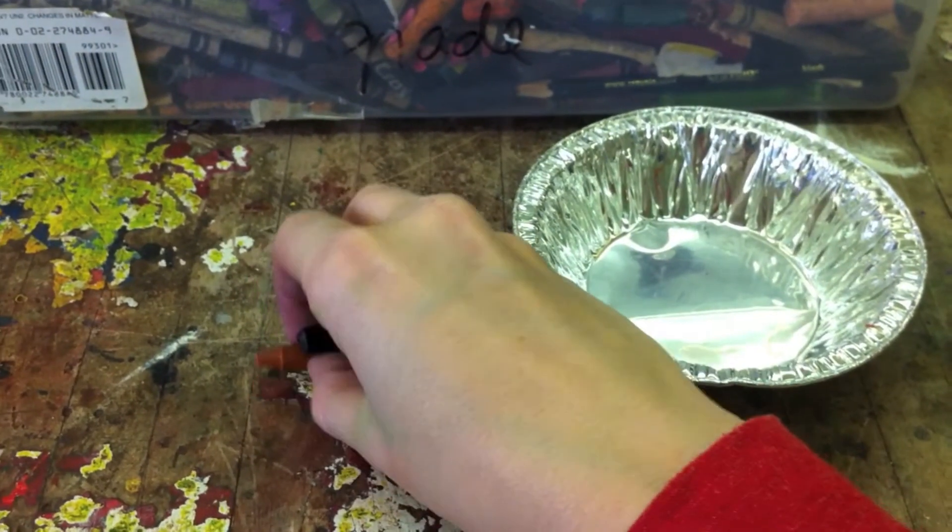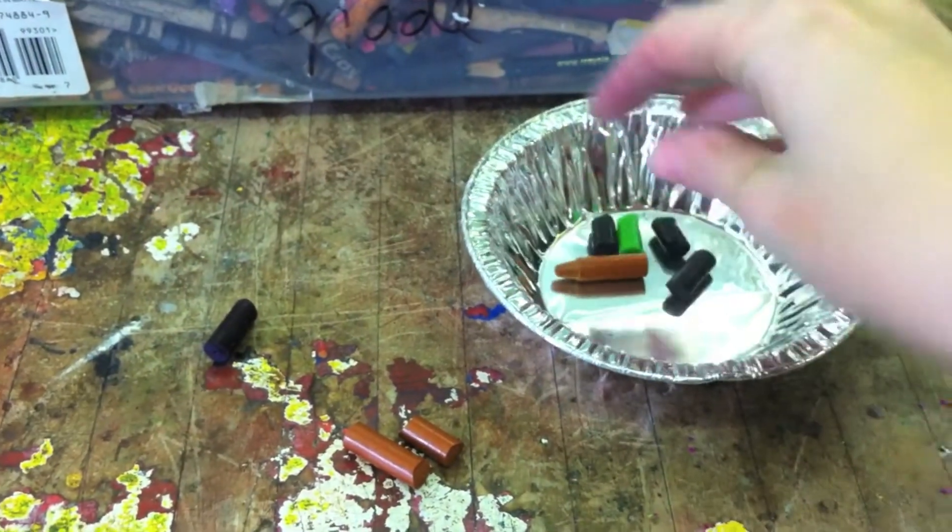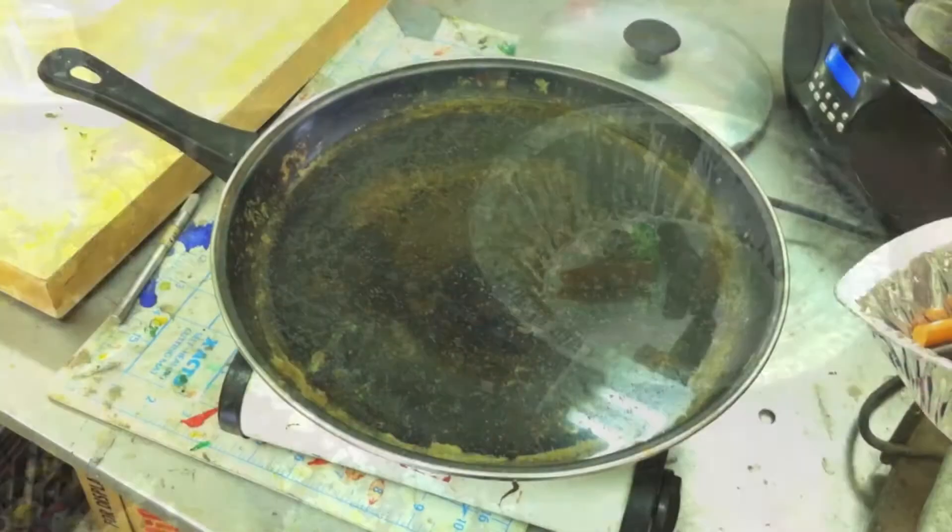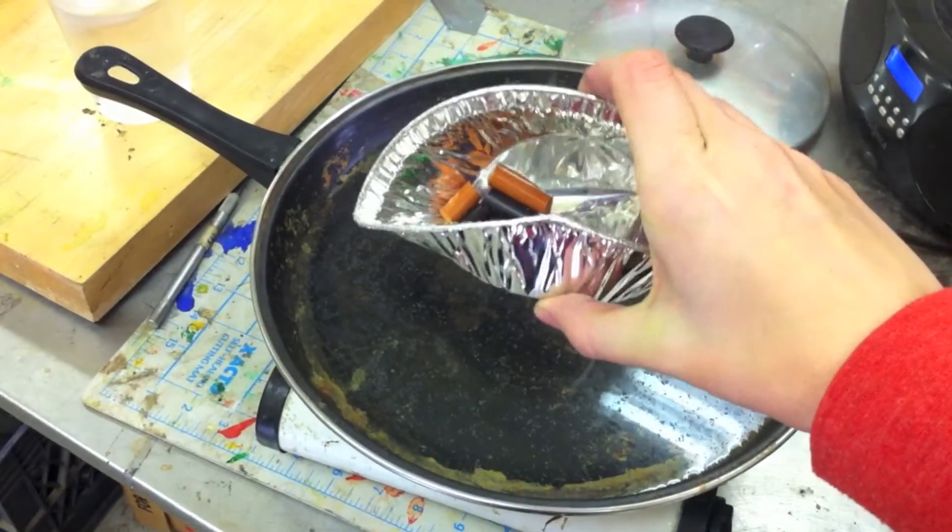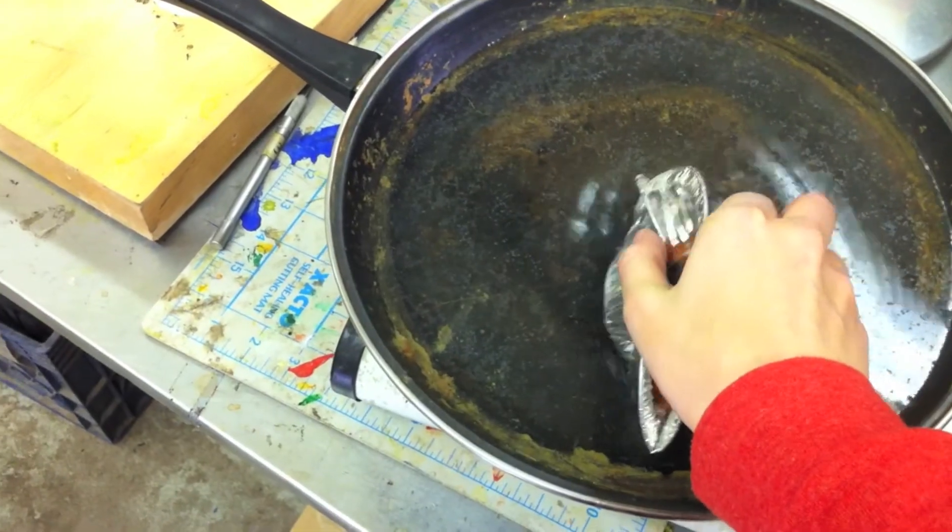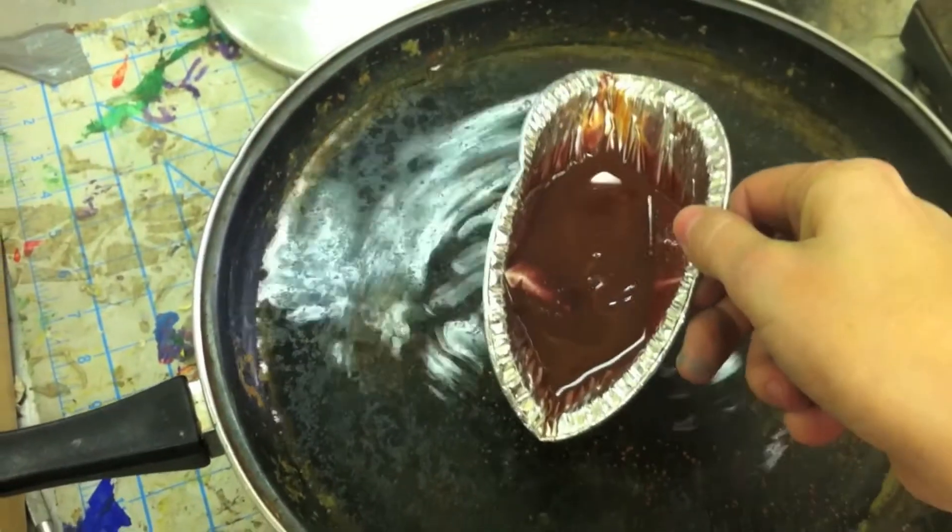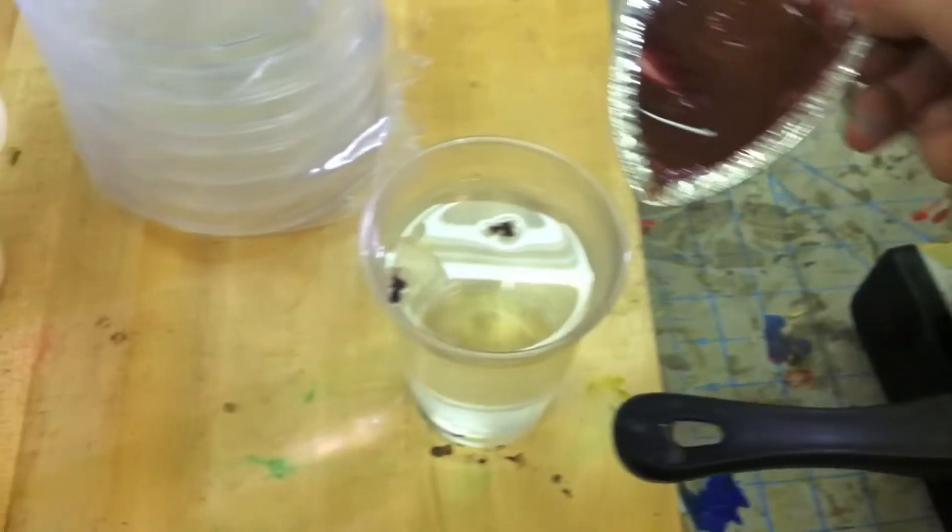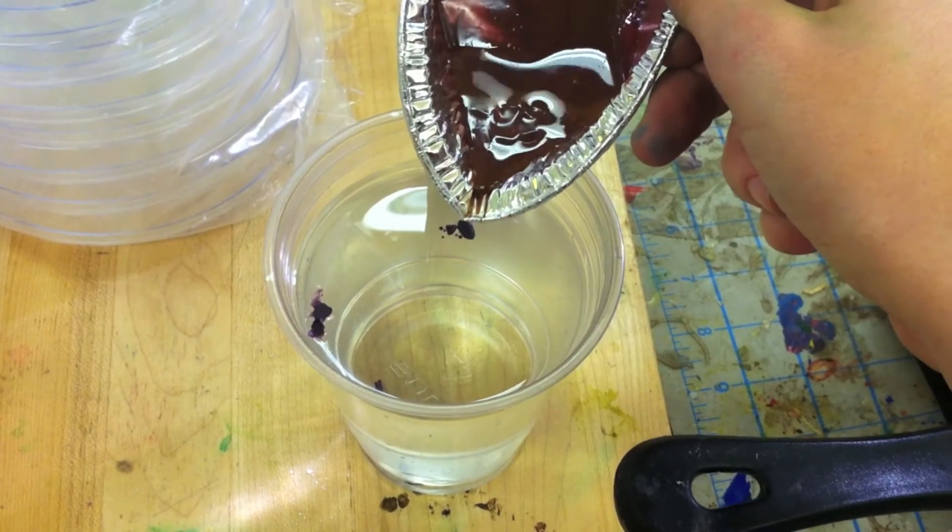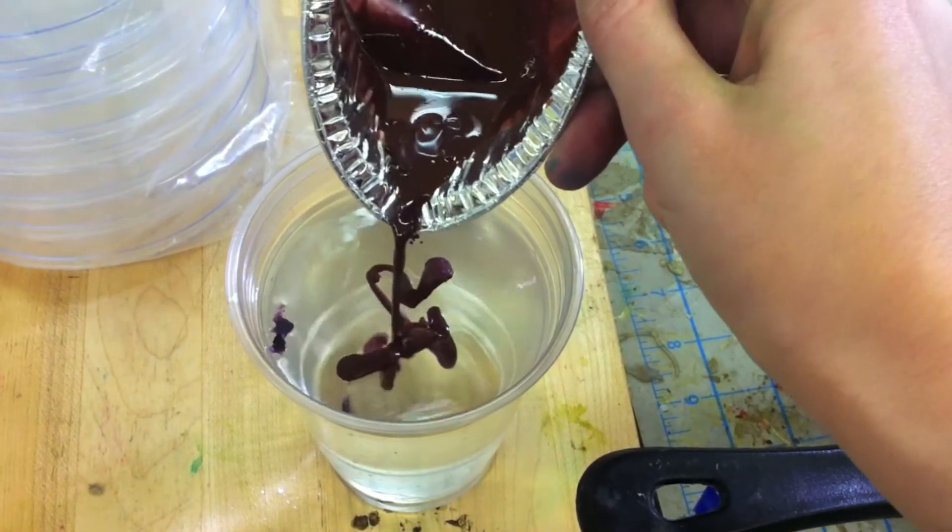Take the pieces of broken crayon and place them into a small round foil tray. Bend the tray slightly in half and place it sitting in the hot water. Let the crayons melt completely and when they have, carefully lift the tray out and pour the lava mixture into a cup of room temperature water.